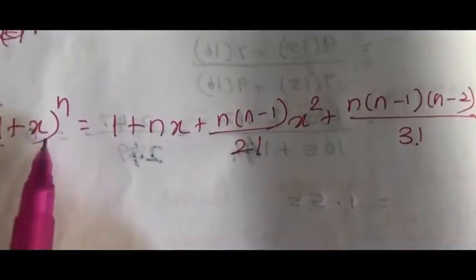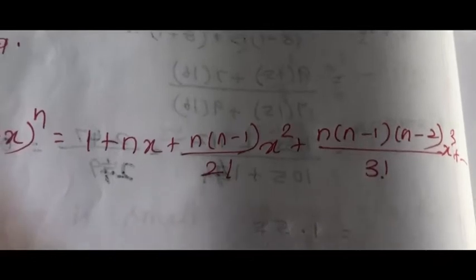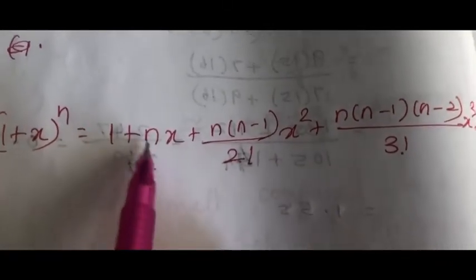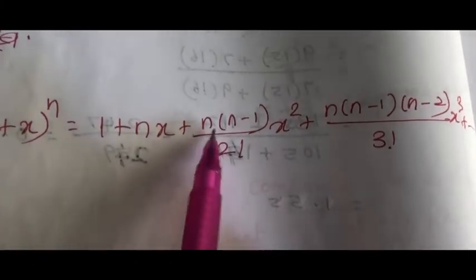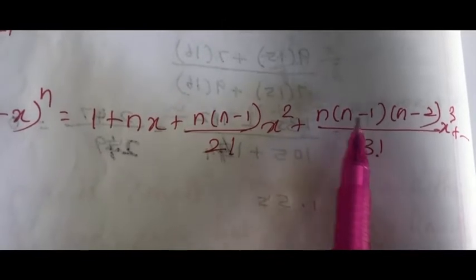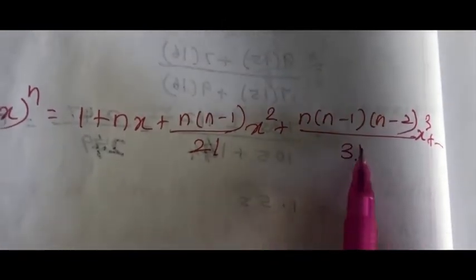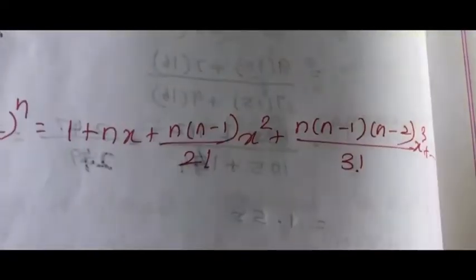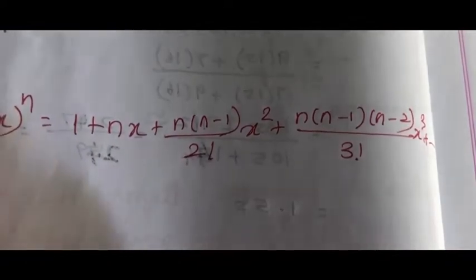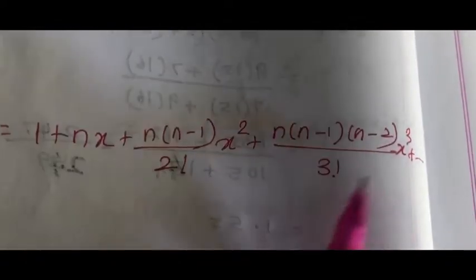So, when we can generalize the terms up to n terms, it is (1 + x)^n = 1 + nx + n(n−1)/2! · x² + n(n−1)(n−2)/3! · x³ and so on. This is the binomial theorem for rational exponent.